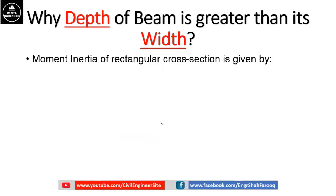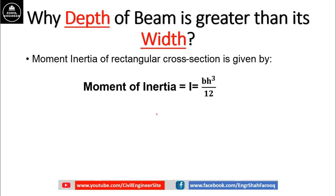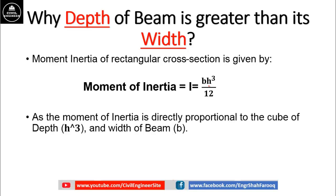Moment of inertia of a rectangular cross section is given by: I = BH³ / 12. Here, B is the width of the beam and H is the height or depth of the beam. As you can see in this formula, moment of inertia is directly proportional to the cube of height and also directly proportional to the breadth or width of the beam.